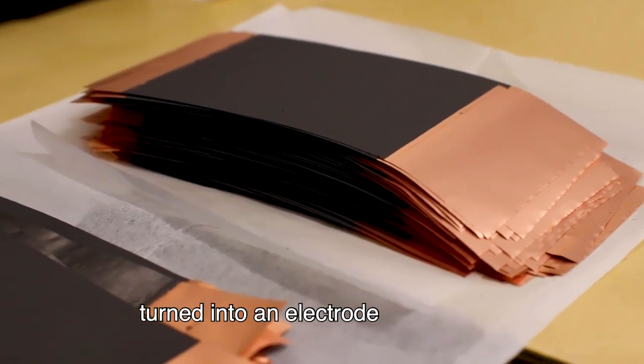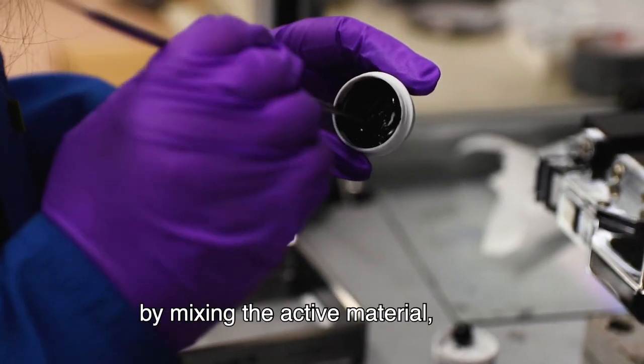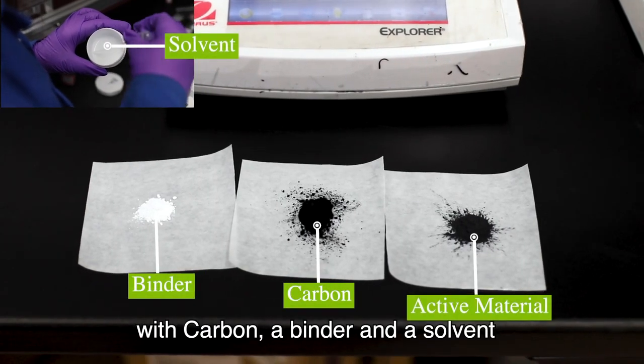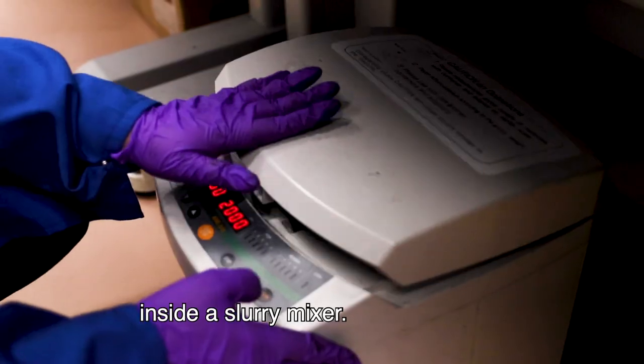Next, the material needs to be turned into an electrode. A slurry is made by mixing the active material with carbon, a binder, and a solvent inside a slurry mixer.